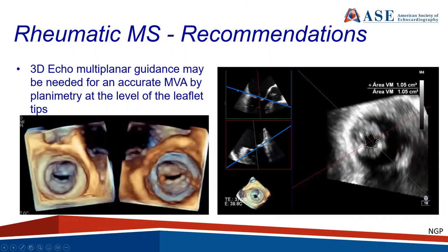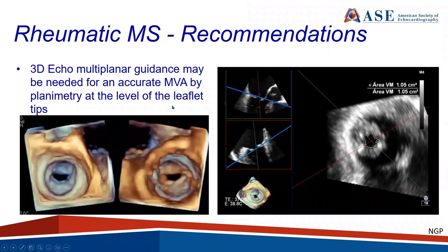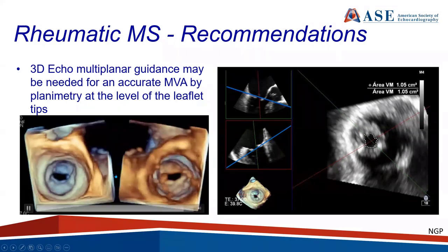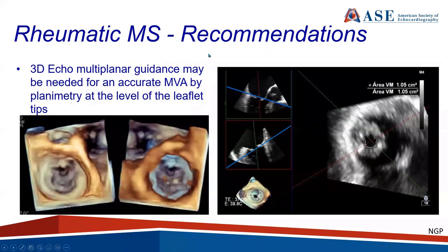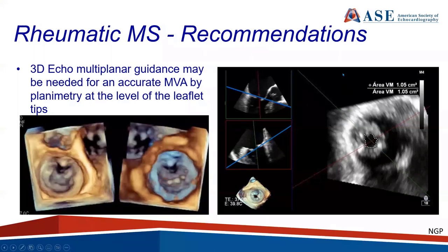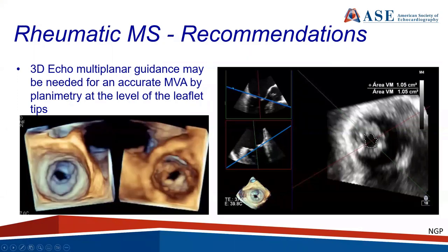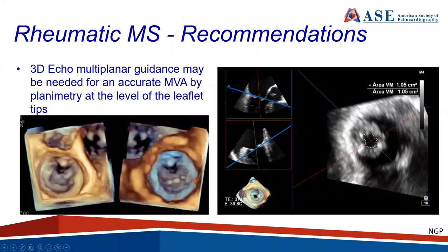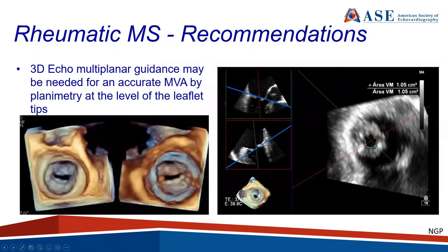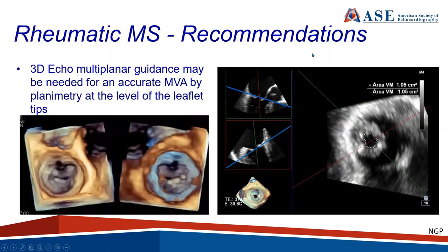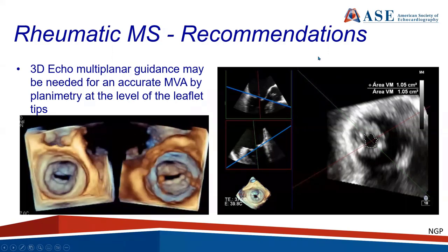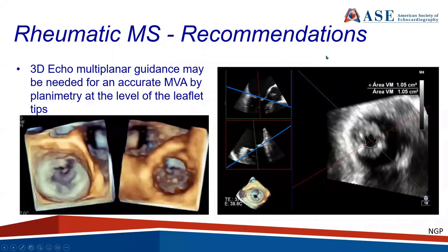With 3D echo, here's a beautiful image of the stenotic mitral valve — the left side seen from above the left atrium and the right side from the left ventricle. Besides depicting the site and shape of the mitral valve orifice, we can also use 3D biplane or multiplanar imaging to align the cursor at the very tips so we don't miss the true severity of the mitral valve. Avoid using too much gain, which can creep into the valve orifice, or too little gain, which causes dropouts.